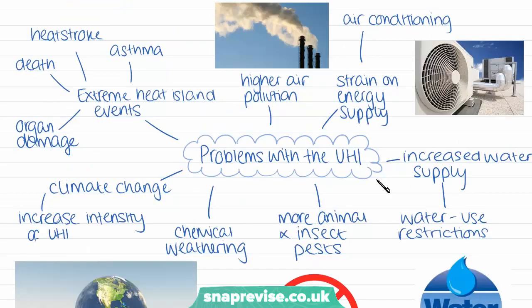Now looking at why the urban heat island is a matter of concern — considerable work has been done on the urban heat island effect in London in recent years, and a number of different concerns have been highlighted. One of the main concerns is that as temperatures rise in the summer months especially, conditions in cities such as London can become so hot and uncomfortable, especially in buildings or in public transport systems. This extreme heat can cause many negative health effects. Extreme heat events can cause heat stroke, asthma, even organ damage, and especially in very vulnerable groups such as babies and elderly people, it can also cause death.